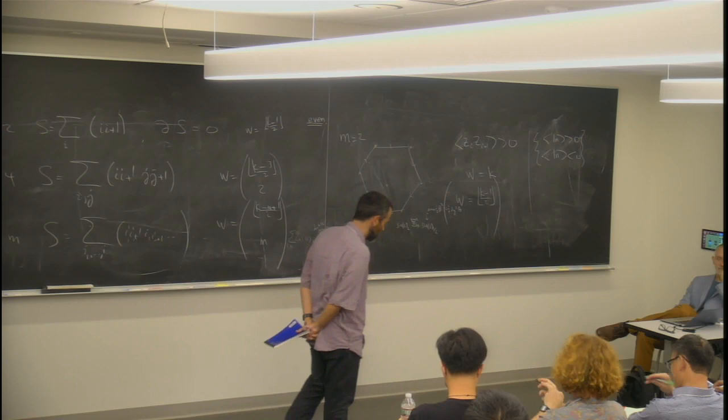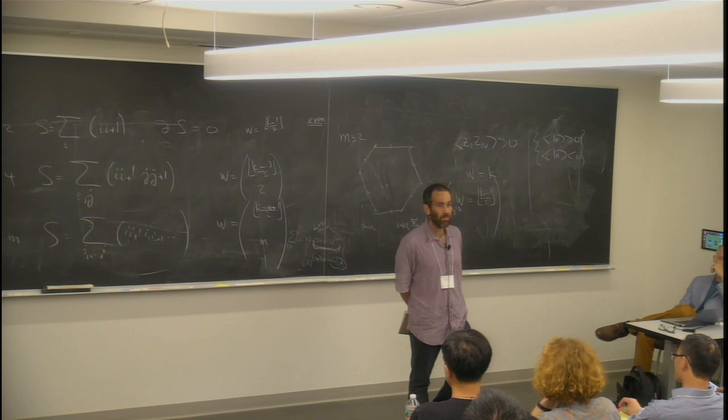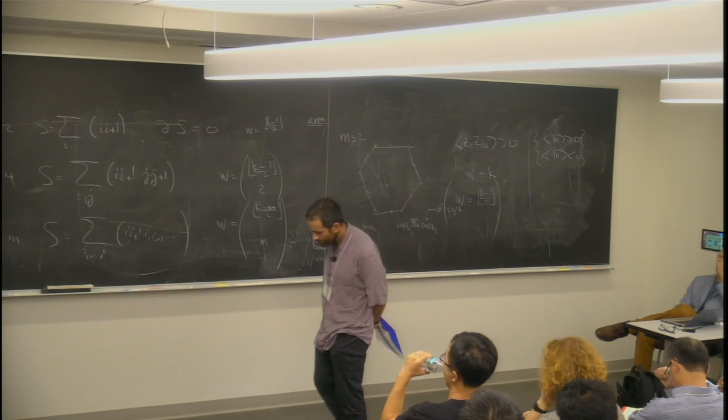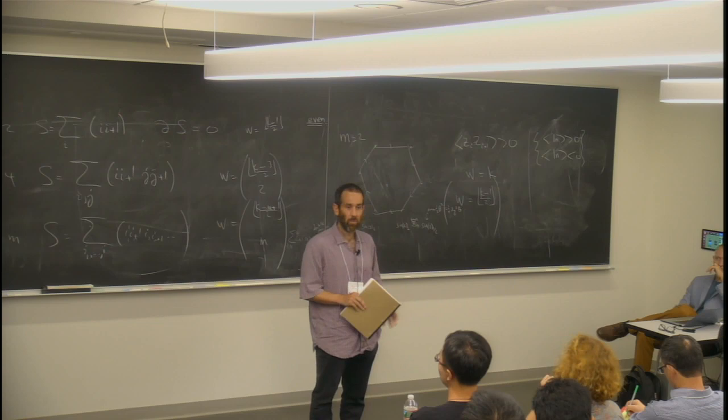So topology is kind of hard to avoid in thinking about phases of quantum matter. It's sort of baked into the definition, the definition of a phase of quantum matter being an equivalent class of Hamiltonians, such that you can get from the ground state of one to the ground state of another without encountering any kind of wall of non-analyticity. That is, if that's the case, then we call them equivalent. And so this introduces some notion of continuity.